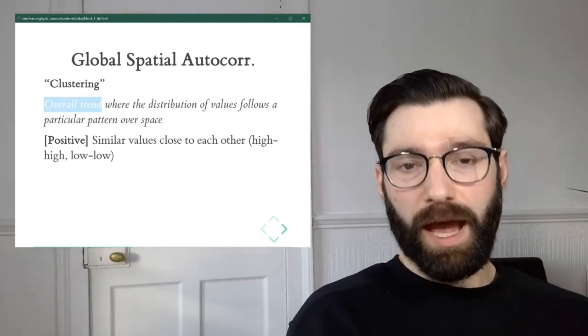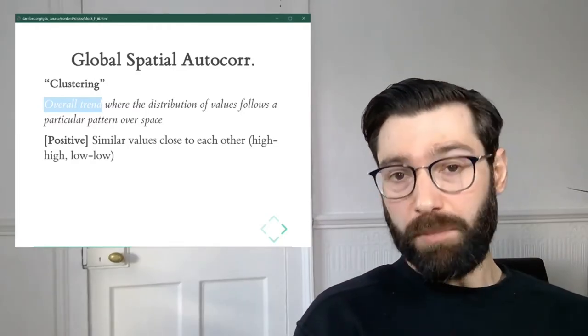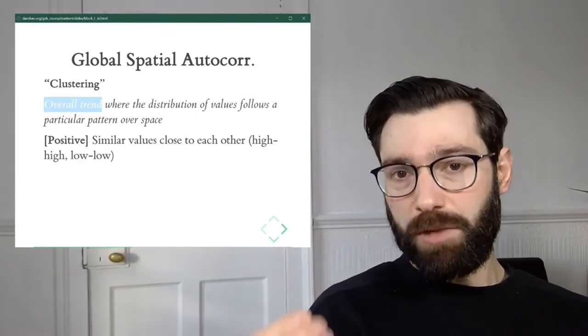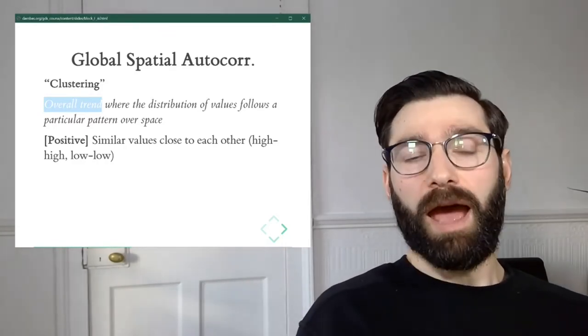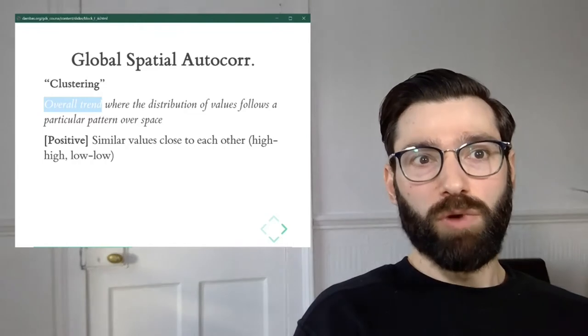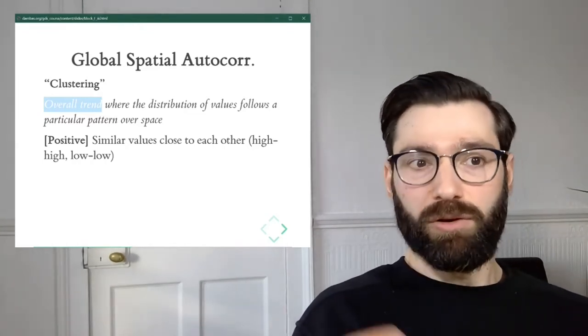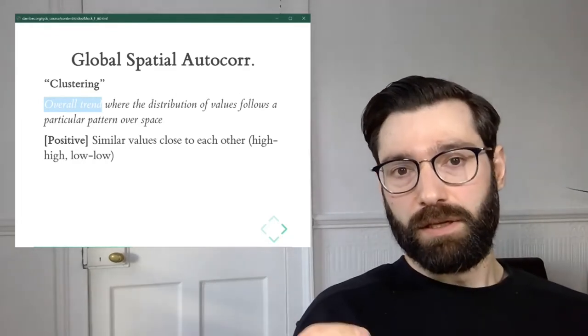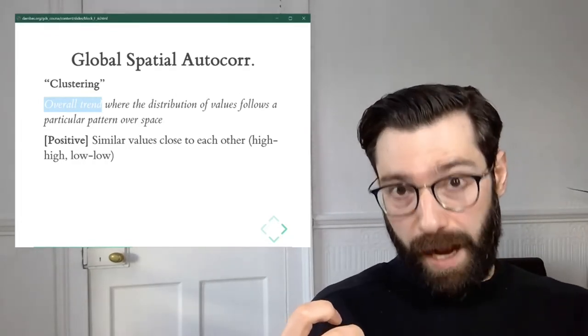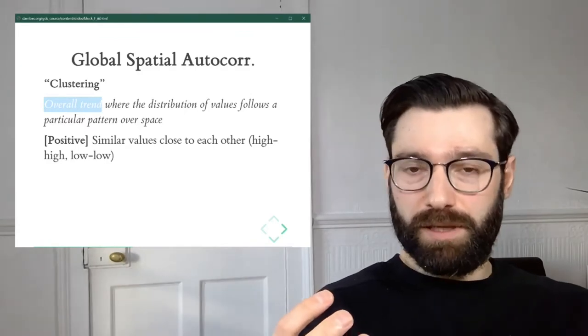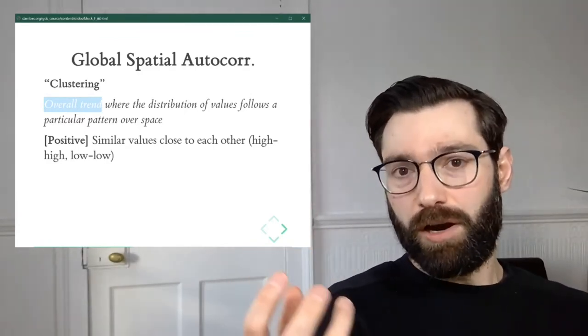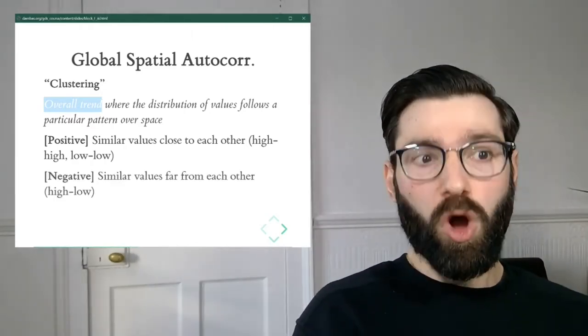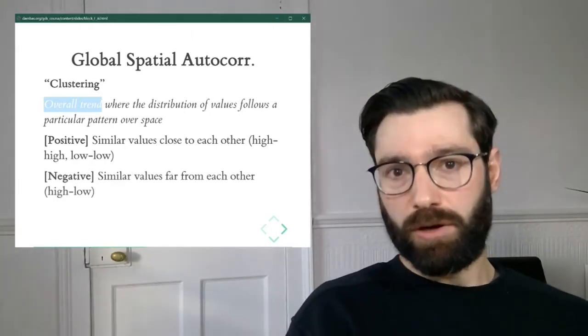One is positive, and this is cases where similar values overall tend to be clustered in similar locations. And this gives rise to what we would call high-high or low-low. So we can have cases where similar values, similarly high values tend to be clustered in the same location.